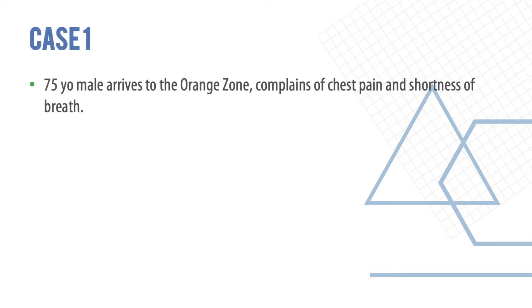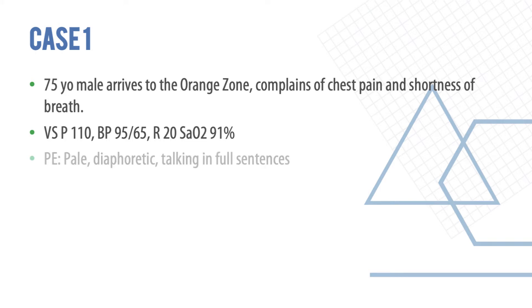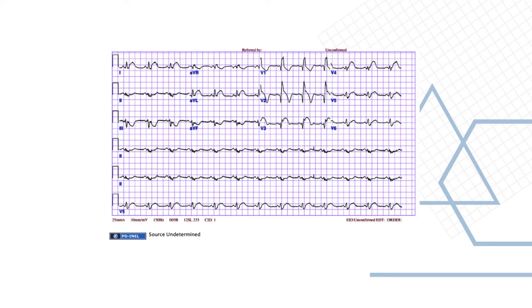We'll start with some examples. Consider a 75-year-old male who arrives with complaints of chest pain and shortness of breath. Vital signs include a pulse of 110, blood pressure 95/65, respiratory rate 20, and oxygen saturation 91%. On examination, the patient is pale and diaphoretic, though talking in full sentences, and the ECG shows characteristics of an acute myocardial infarction.